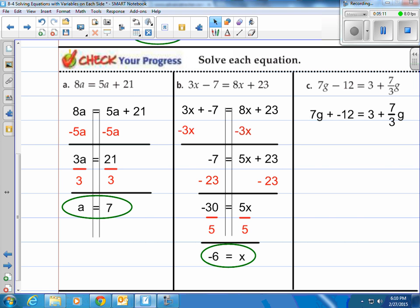And 7 thirds g is actually smaller than 7g, so I'm going to subtract the 7 thirds g from both sides. And when we do that, I'm going to change my 7 into 21 thirds. Have the bottoms have a common denominator of 3. So then 21 minus 7 is 14g, or 14 thirds g, plus negative 12 equals 3.